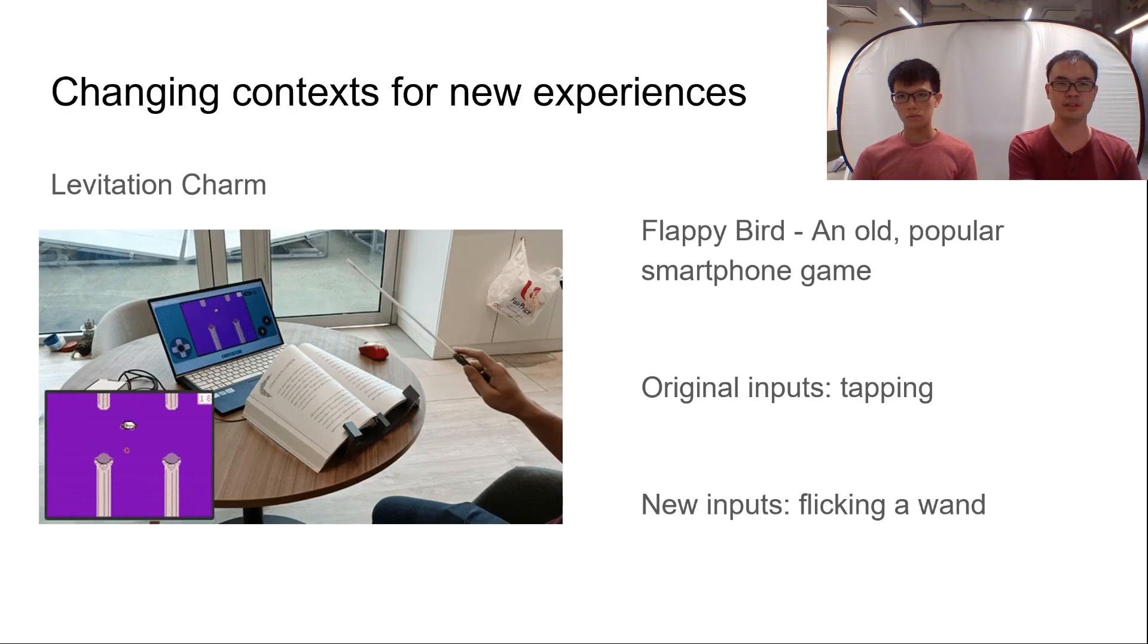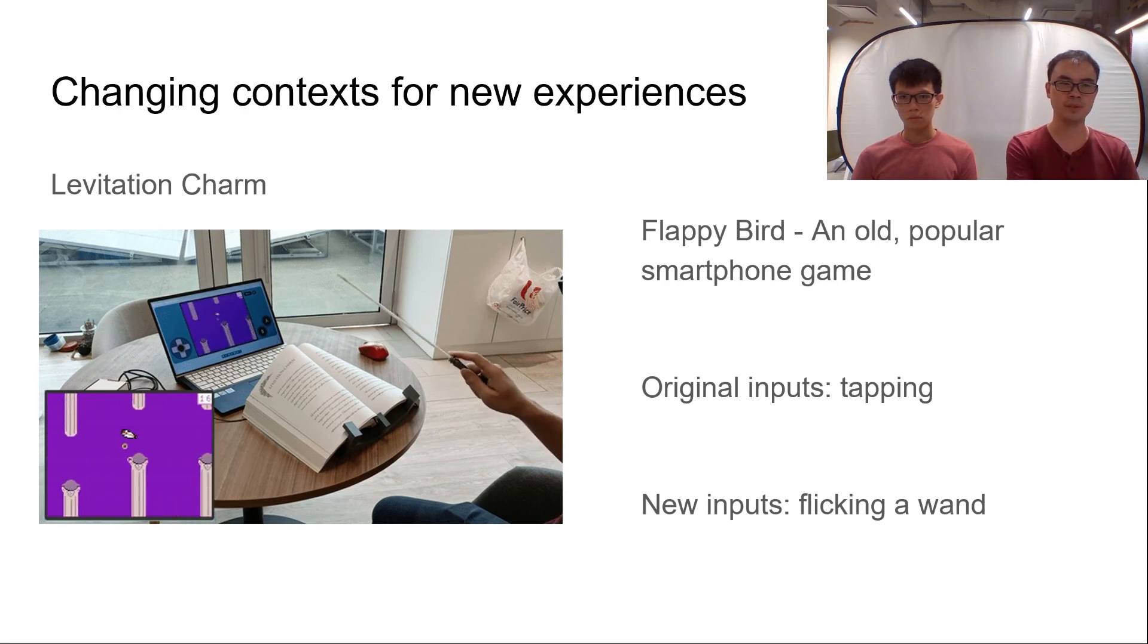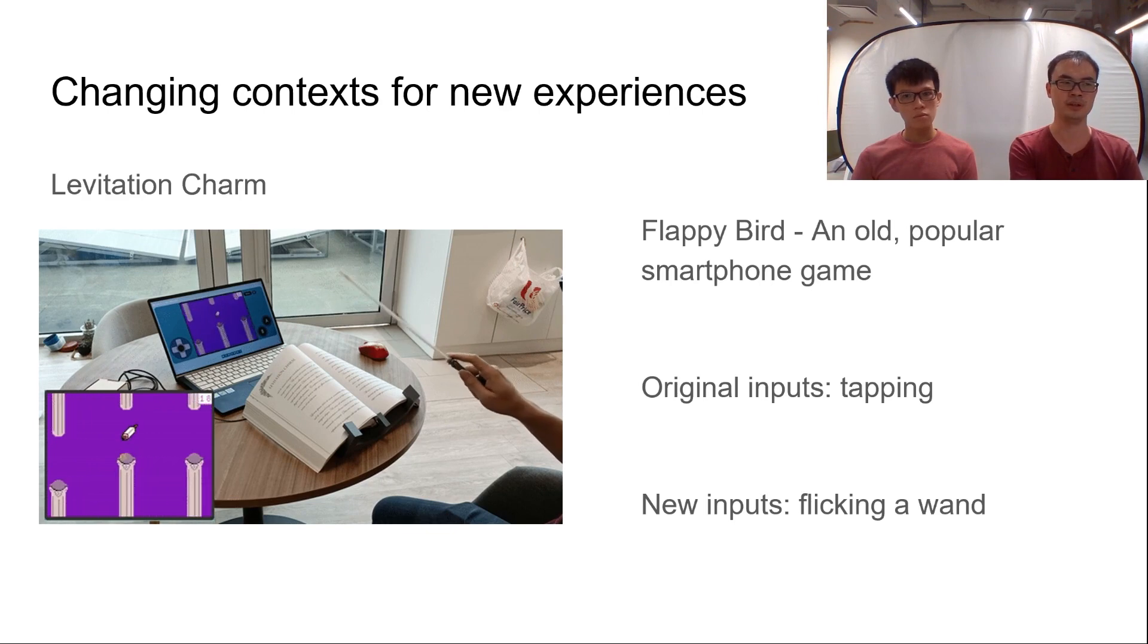Next up we have Levitation Charm, our example of new context for existing games. This is a recontextualized version of Flappy Bird, a popular smartphone game that has unfortunately since been removed from app stores for good. Instead of tapping a screen to flap a bird's wings, the player instead flicks a magic wand Harry Potter style to levitate a feather and avoid obstacles.